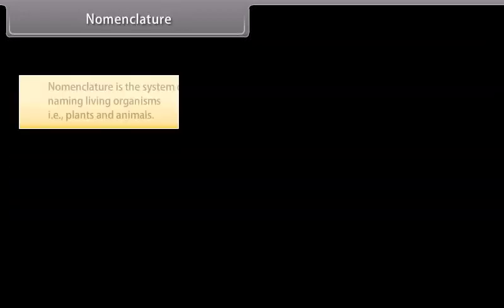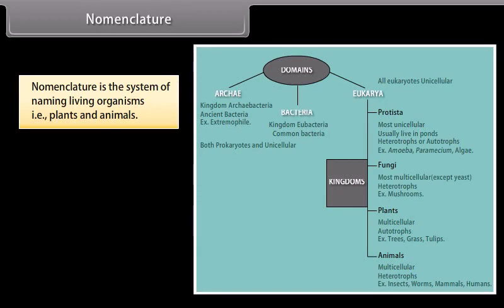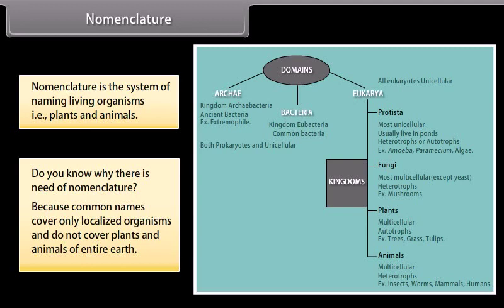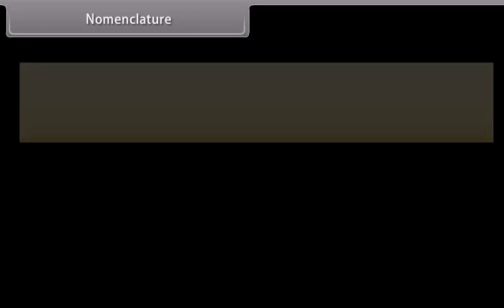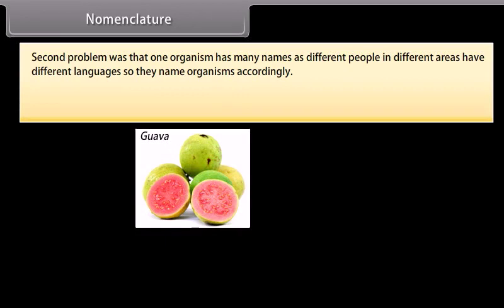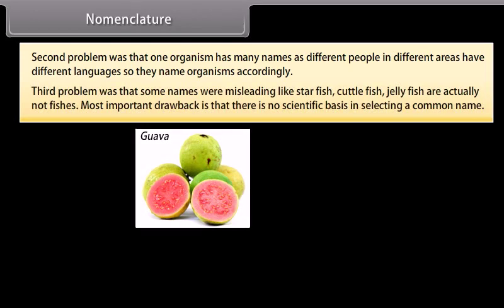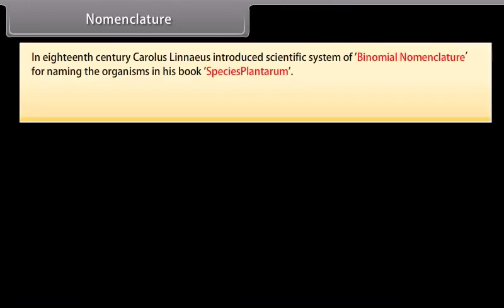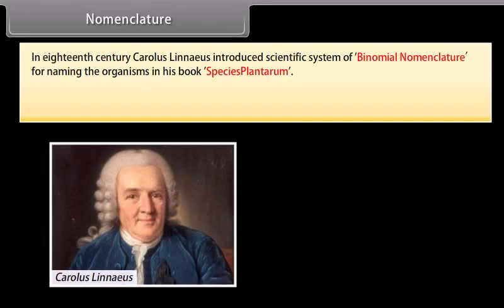Nomenclature is the system of naming living organisms, that is, plants and animals. Common names cover only localized organisms and do not cover plants and animals of the entire earth. One organism may have many names as different people in different areas have different languages. Some names are misleading — starfish, cuttlefish, and jellyfish are actually not fishes. There is no scientific basis in selecting a common name. In the 18th century, Carolus Linnaeus introduced the scientific system of binomial nomenclature for naming organisms in his book Species Plantarum.